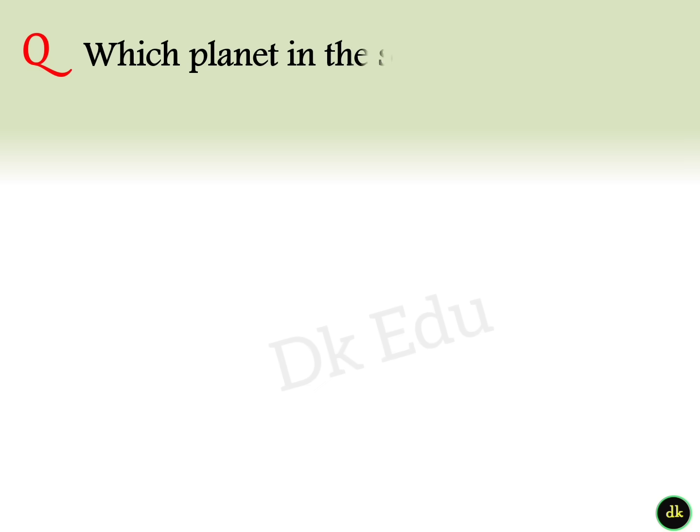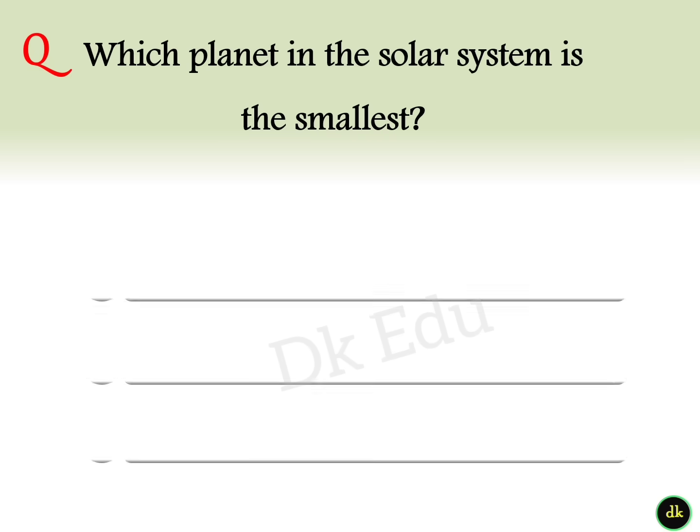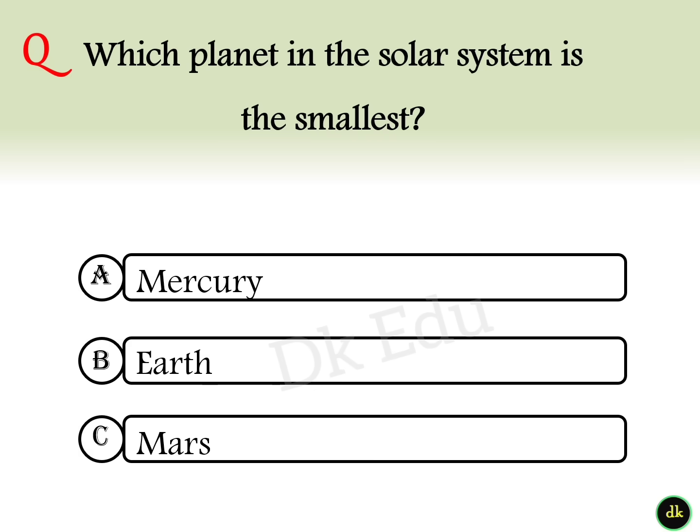27th question: Which planet in the solar system is the smallest? Answer option A: Mercury.